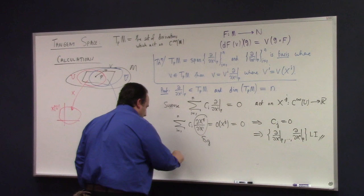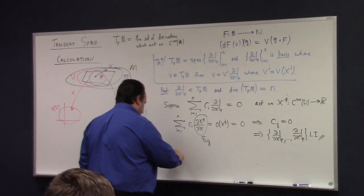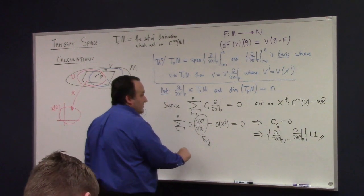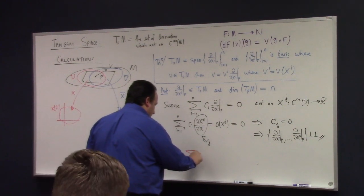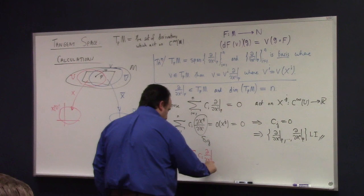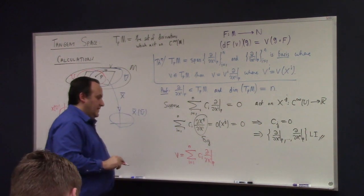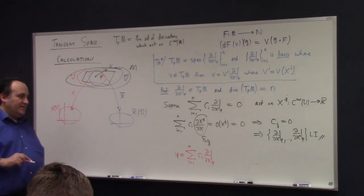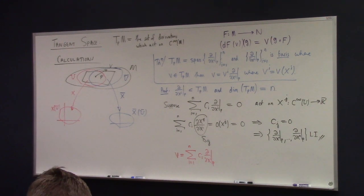So if I let v act on f, how does it go? Suppose you've got v equal to a sum of c^i ∂/∂x^i at p. I'm trying to follow Lee and use the repeated index convention.